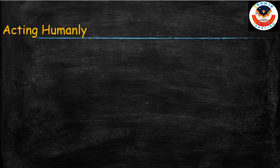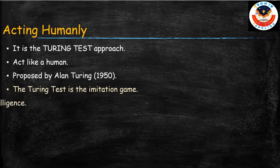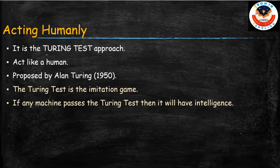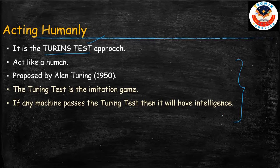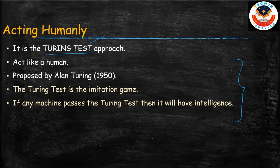The next one is acting humanly. In acting humanly we look at the Turing test approach. We will be discussing the Turing test in detail in the coming video. Briefly: acting humanly means the machine acts the same way a human acts — the way we talk to people, the way we behave with people — the machine works in that same way.